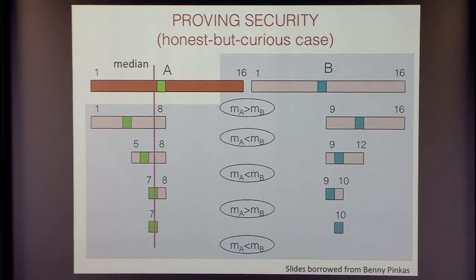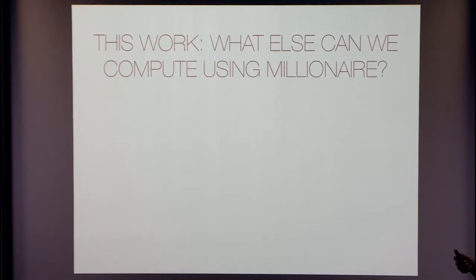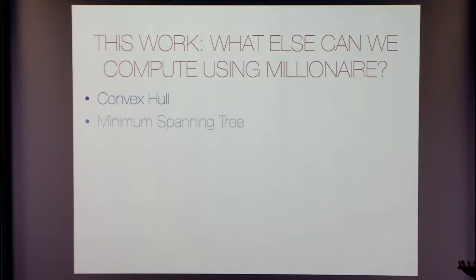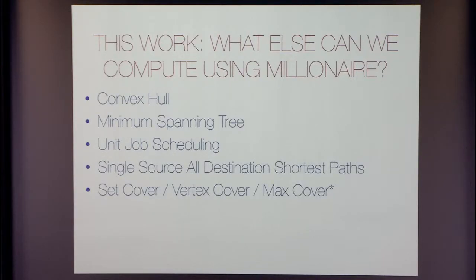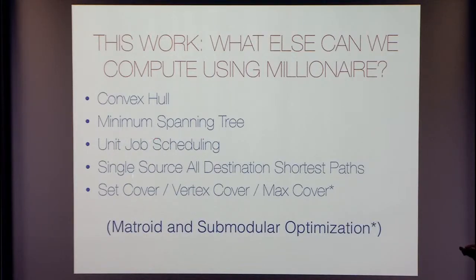The work of Agarwal, Mishra, and Pinkas shows that using just secure comparison, they can compute the median. What more can you compute just by using the millionaire's problem? We show that a host of problems can actually be solved just by using secure comparison: convex hull, minimum spanning tree, some job scheduling problems, single source all-destination shortest paths, and some approximations. There is a unifying factor — they are related to matroids and submodular optimization.